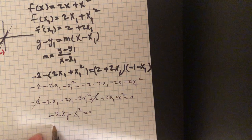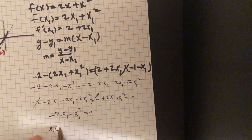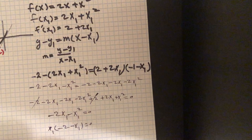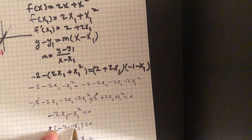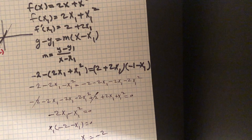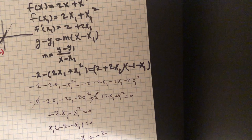So we can factor. I can factor out x1, giving x1 times the quantity negative 2 minus x1 equals 0. So x1 is either 0 or — setting negative 1 minus x1 equals 0 — x1 equals negative 2. Therefore x1 is either 0 or negative 2.